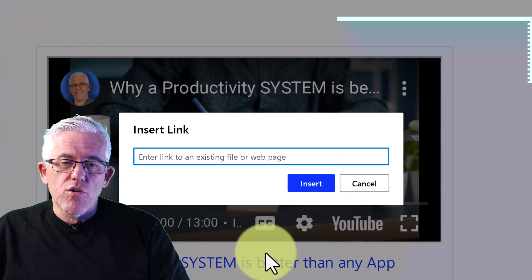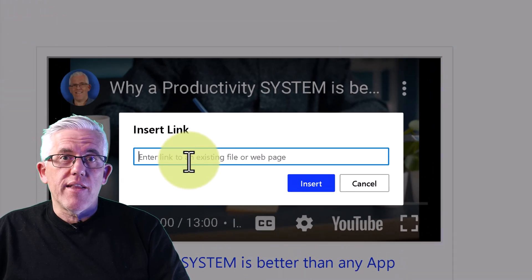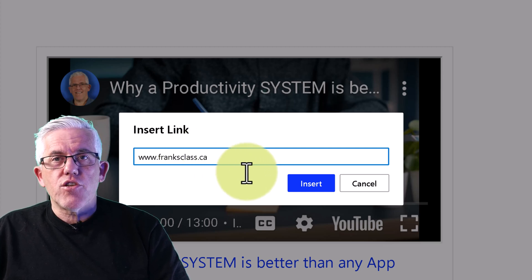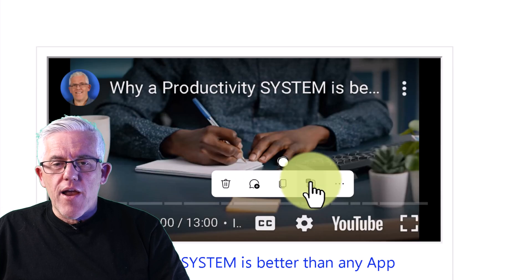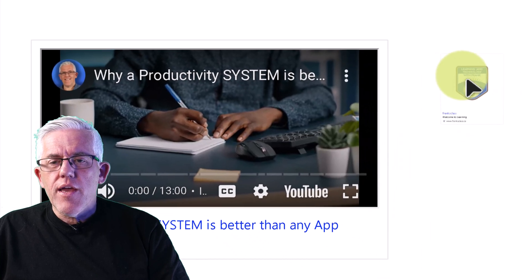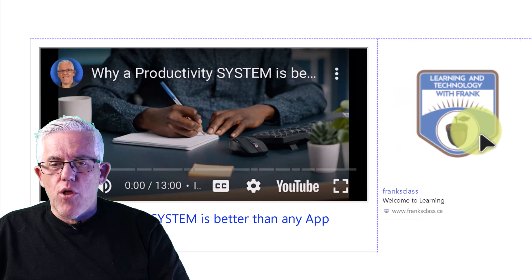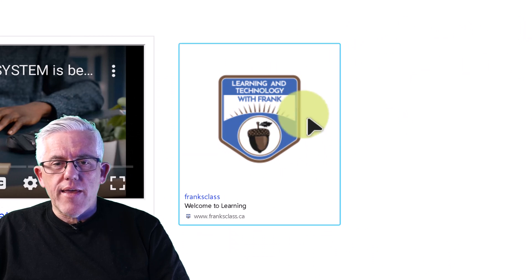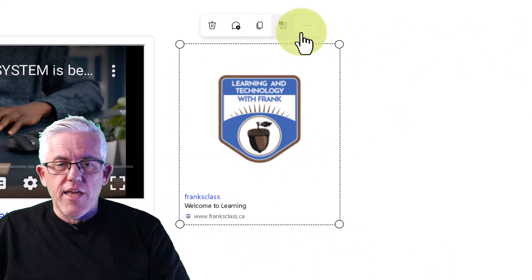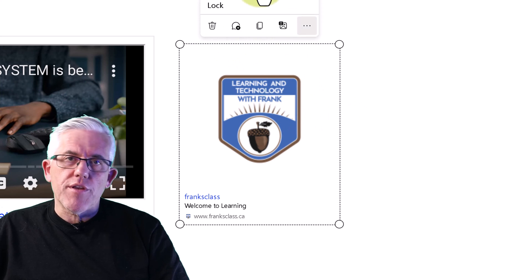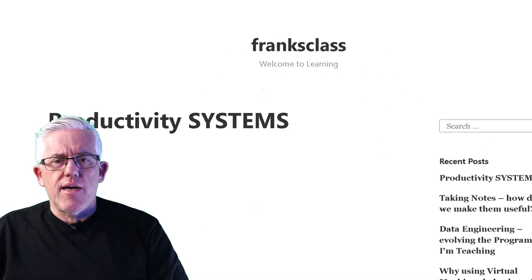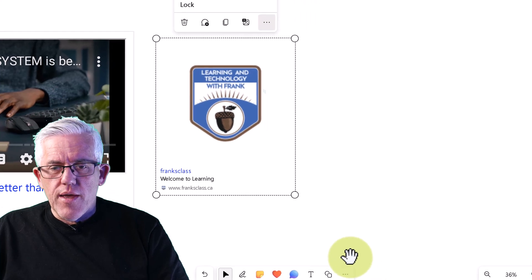I can also post links. I'll type in my blog address — franksclass.ca — and that link will appear on the whiteboard. It picks up the favicon icon from the blog. I can make annotations on it, bring it to front, lock it in place, and if I click it, it'll open the website in a web browser. Another great thing you can do on the whiteboard.